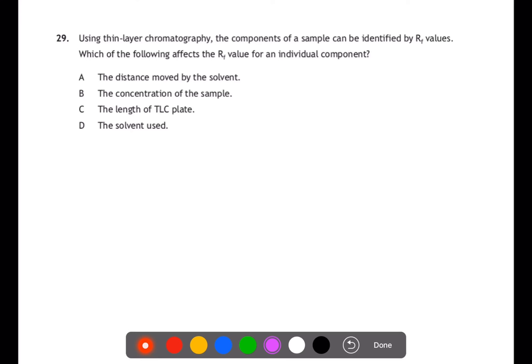Question 29. Using thin layer chromatography, the components of a sample can be identified using Rf values. Which of the following affects the Rf value for an individual component? For A, the distance moved by the solvent, this would be the lower line of the Rf value and since it's just a ratio, this won't have an effect. The concentration of the sample will just make your spot more concentrated. The length of your TLC plate won't really make any difference. You'll just stop it sooner or later. But the type of solvent that you use will change what Rf value you have because this will change how far your spot can travel.